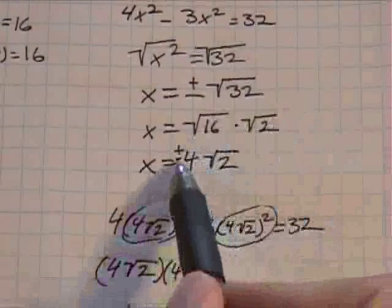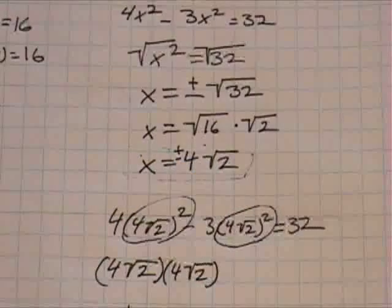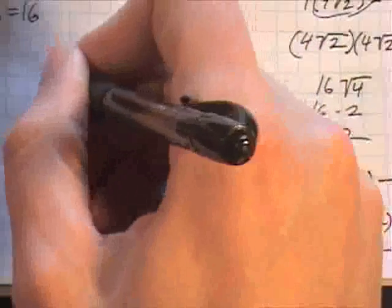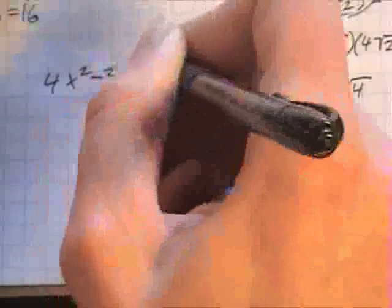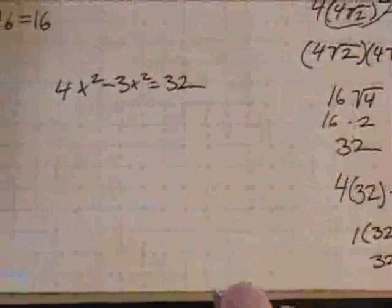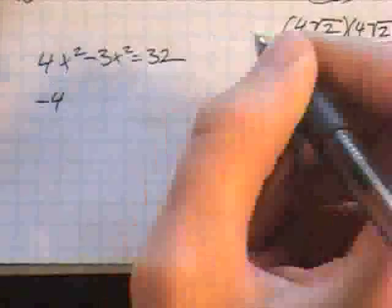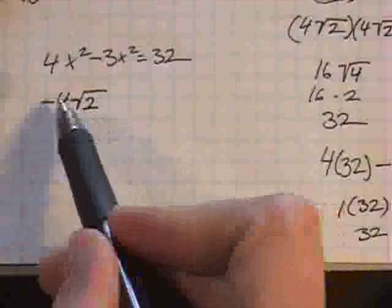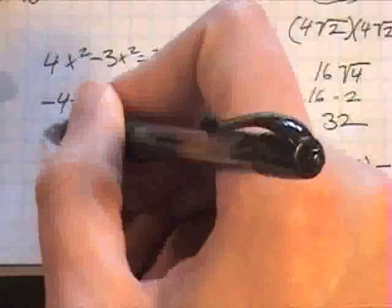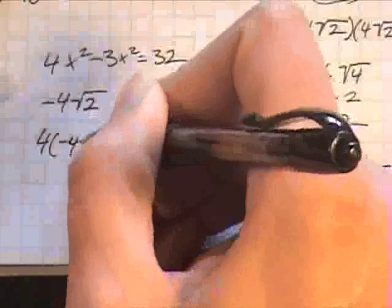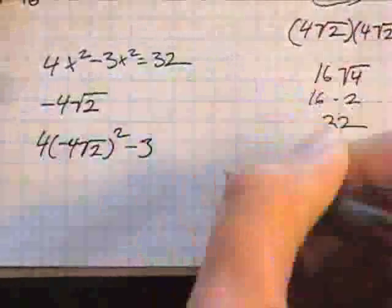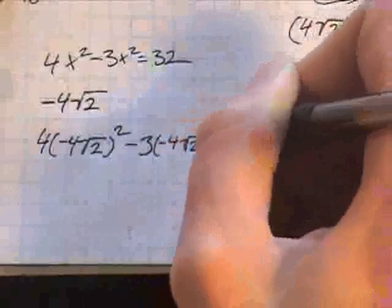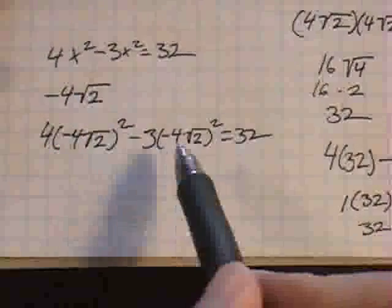The last thing is looking at the negative version of this right here. So, let's plug that in. So, our original equation is 4x to the second minus 3x to the second equals 32. And what we're plugging in is the negative version, which is negative 4 square root of 2. That's what we're plugging into these. So, now we substituted it in for each of the x's.